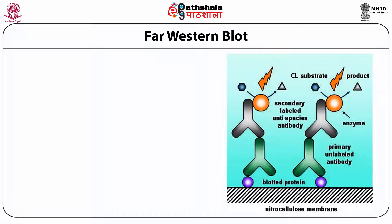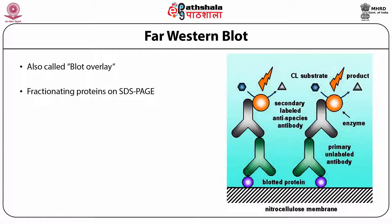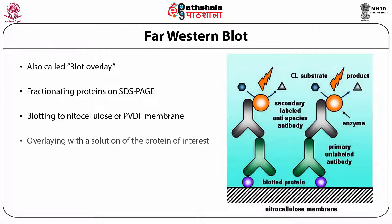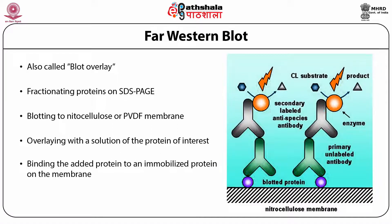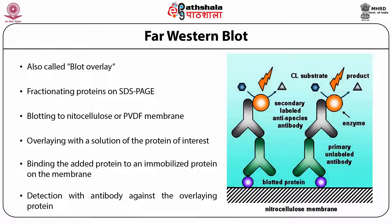Far western blot is another technique to find out interactions between proteins, also called blot overlay. It involves fractionating proteins on SDS-PAGE, blotting to nitrocellulose or PVDF membranes, overlaying with a solution of the protein of interest, binding the added protein to immobilized proteins on the membrane, and detection with an antibody against the overlaying proteins. It is like a western blot where you can detect both antigen and antibody.